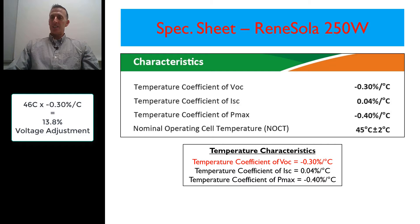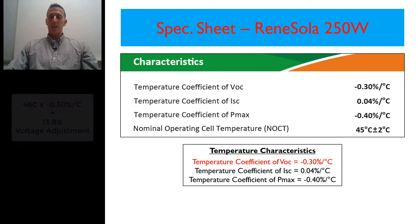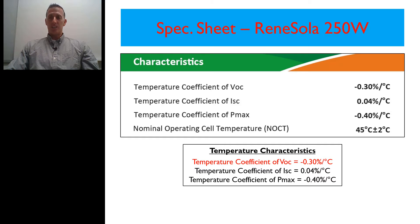That tells us that if you multiply 46 degrees by this number right here, negative 0.3%, we're going to have a temperature swing of just under 14%, meaning, or sorry, not a temperature swing, but you'll have a voltage adjustment of 14%. That would be an increase in voltage.